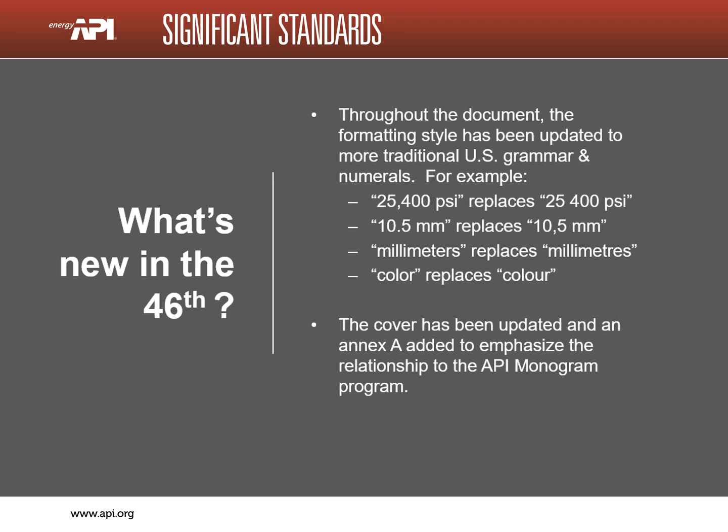There have been some very obvious changes to the 5L document. One change is a return to more traditional US grammar and numerals. For example, commas are again used in USC numbers as thousands separators — you will see 25,400 instead of 25 space 400. Decimal points are used instead of commas in SI decimal fractions — you will now see 10.5 millimeters instead of 10,5 millimeters. And the spelling of some words is more traditional: color spelled c-o-l-o-r instead of c-o-l-o-u-r, and meter spelled m-e-t-e-r, not m-e-t-r-e.